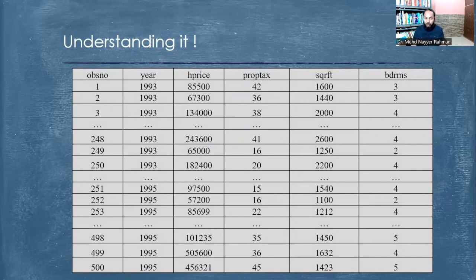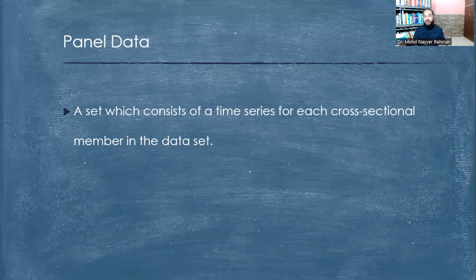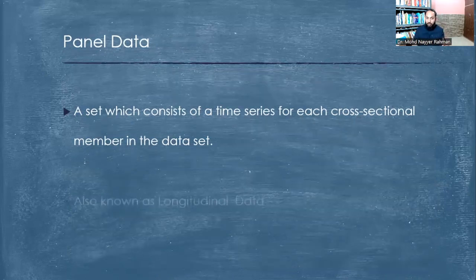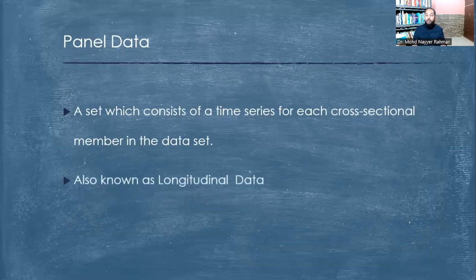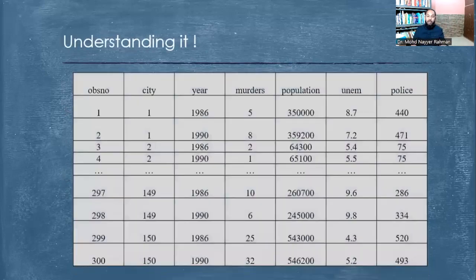The fourth classification is panel data. Panel data consists of time series of each cross-sectional member in the data. It is also known as longitudinal data because it is considered to give much more information about phenomena, about countries, about variables across different sections.